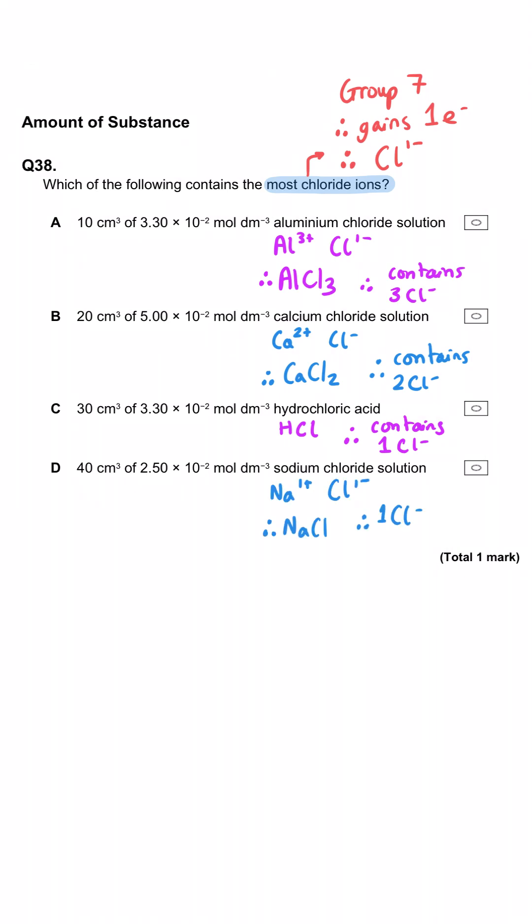Hydrochloric acid you'll probably remember is HCl and sodium chloride NaCl. And so what we can see is that each of these formulae have a specific number of chloride per formula. And so what we need to do now is process the number of moles that we've got of each of these compounds and multiply it by the number of chloride ions per formula.